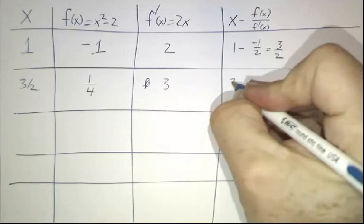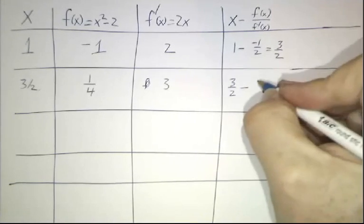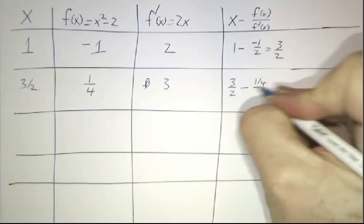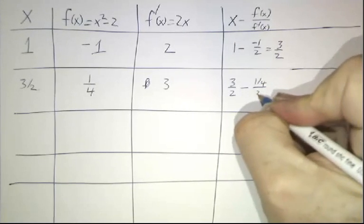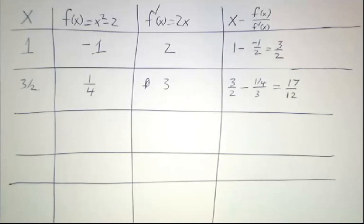And so we want 3 halves minus 1 quarter divided by 3. That winds up being 17 twelfths.